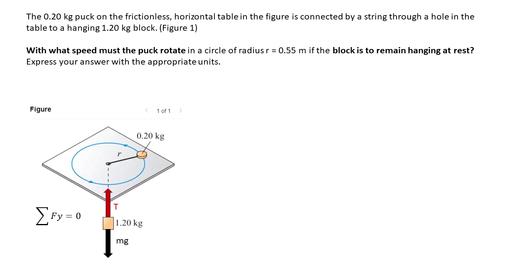So mg needs to be equal to the tension. The summation of the forces in the y direction needs to be 0. That's why the tension has to be equal in magnitude and opposite in direction as mg.